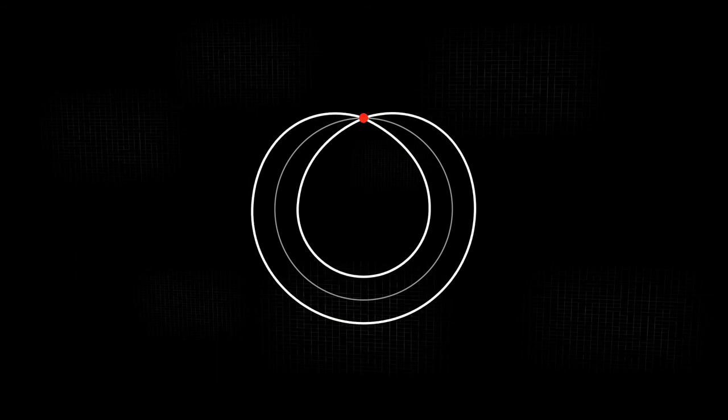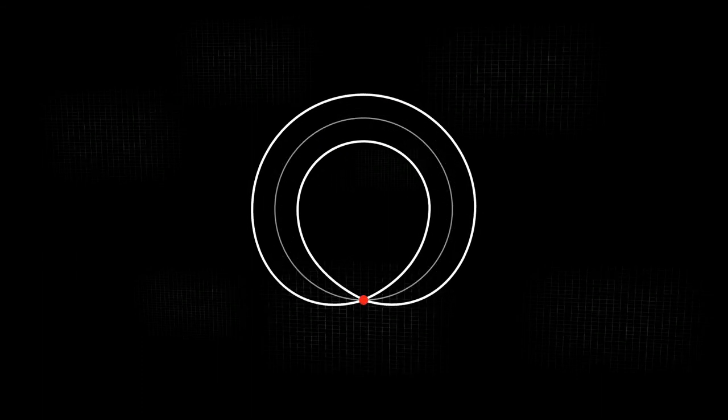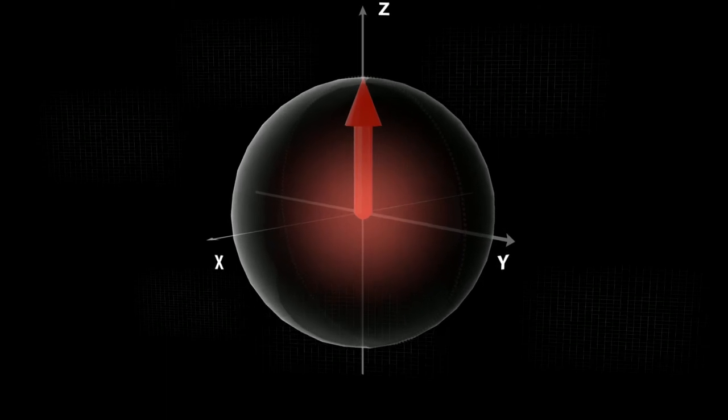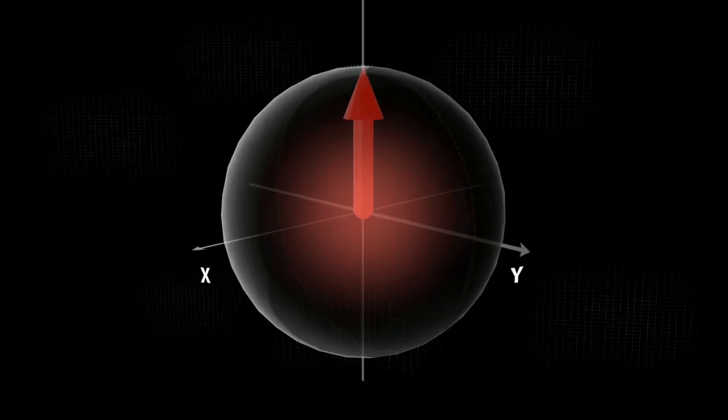Let us now analyze the spin state with one node in more detail. The antipode of the node is the point with the maximum amplitude. On the Bloch sphere, this corresponds to the exact direction of the spin vector.